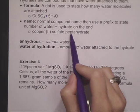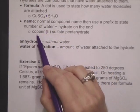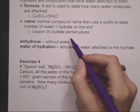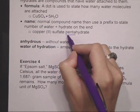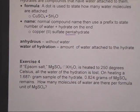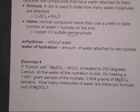When you name it, you use a prefix, you write the name of the compound as normal, and then you use a prefix and the word hydrate to tell how many waters are attached.